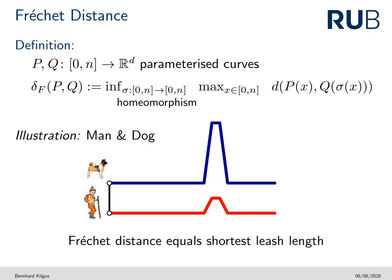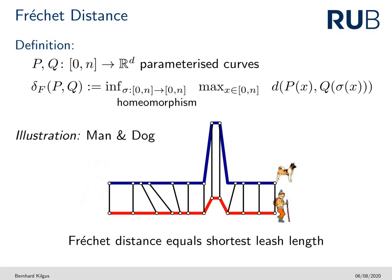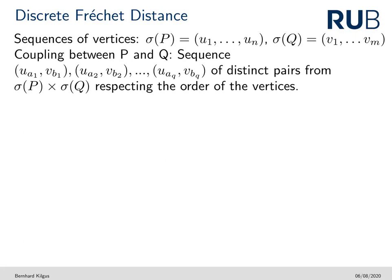Given two curves p and q, we can re-parameterize one curve, say q, and compute the maximum distance of a point on p and the corresponding point on the re-parameterized curve q. The Fréchet distance minimizes this distance by ranging over all possible re-parameterizations. It is commonly illustrated by the shortest leash length between a man and a dog walking on predefined paths continuously from beginning to end.